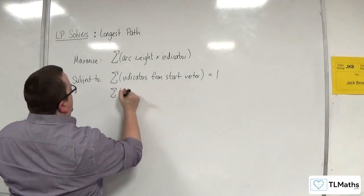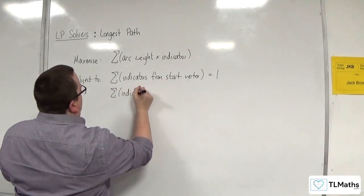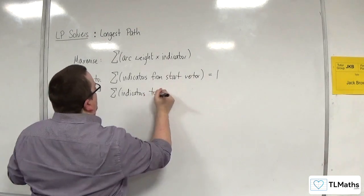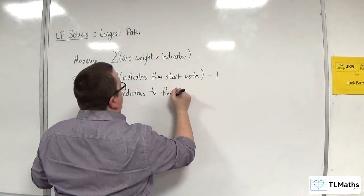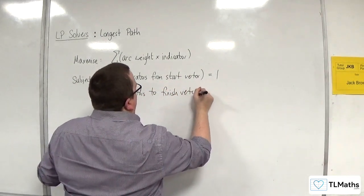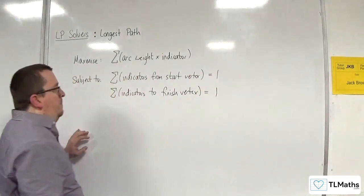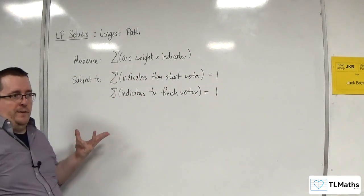We're also going to have all the indicators to the finish vertex. And likewise that's going to be equal to 1 because there's only going to be one route back to the finish vertex.